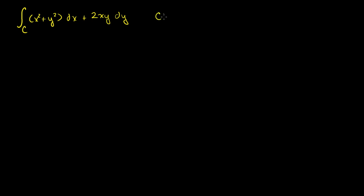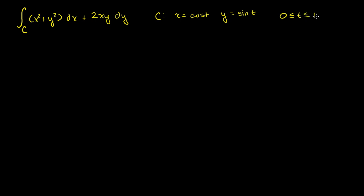Our curve C has the parameterization x is equal to cosine of t, y is equal to sine of t. So far it looks very similar to the closed line integral example we did in the last video. But instead of t going from 0 to 2π, we're going to have t go from 0 to π — t is greater than or equal to 0 and less than or equal to π.